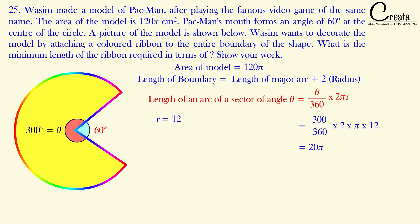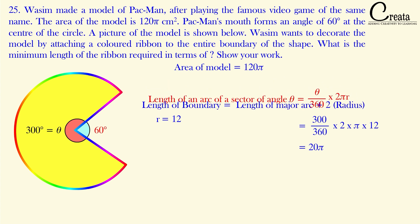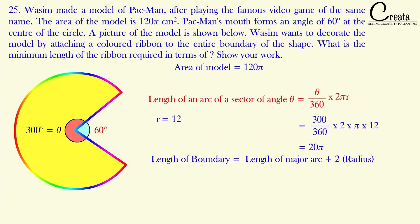We have to calculate the total boundary length, which is the major arc plus twice the radius. Substituting the major arc as 20π and the radius as 12 centimeters, our final answer is 20π + 24 centimeters. We used two formulas: the area of the major sector and the length of the major arc.